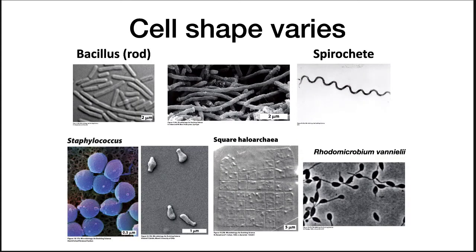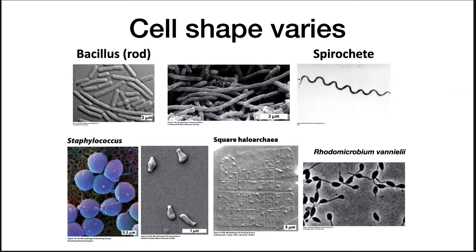Cells can be all sorts of shapes and sizes. There are bacilli, which are rod-shaped; cocci, which are spheres; and spirochetes, which are corkscrew shapes. There are even amorphous squares and cells connected by tubes, as shown in the lower right with Rotomicrobium finellii. All of these types of diversity are found in the microbial world.